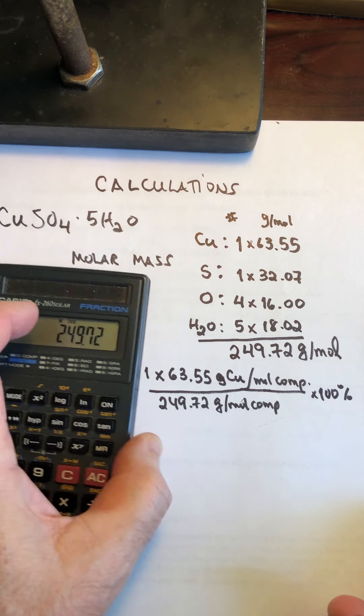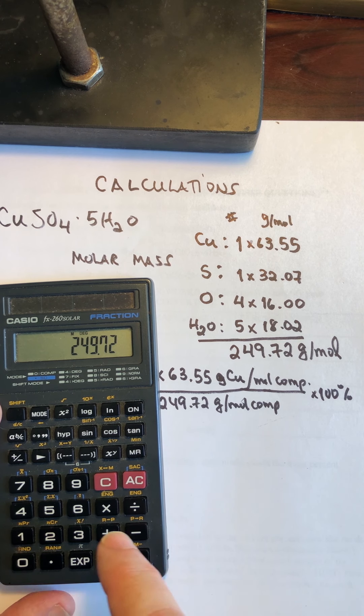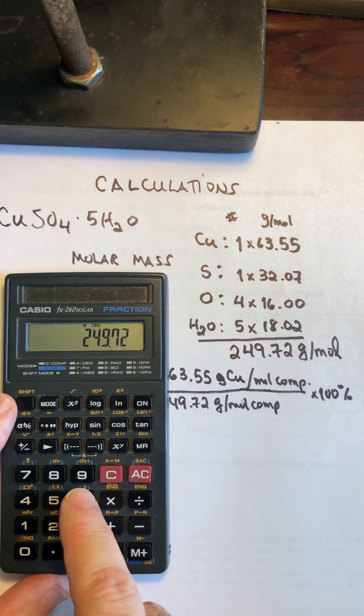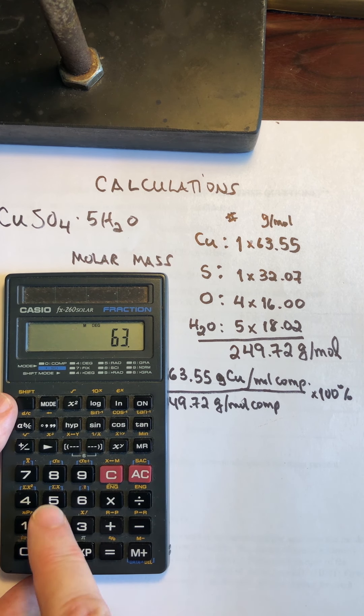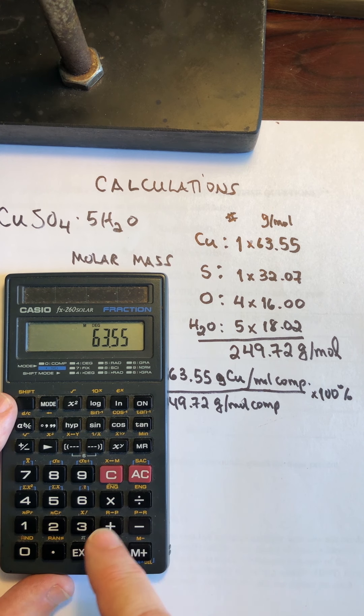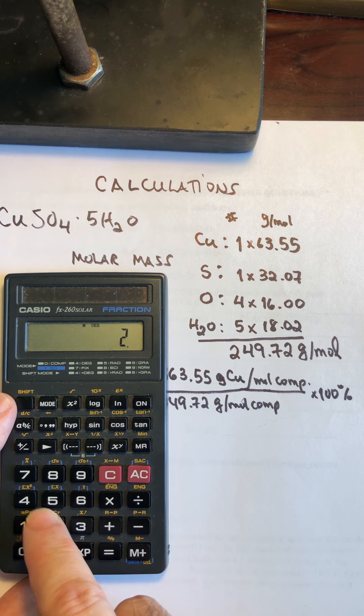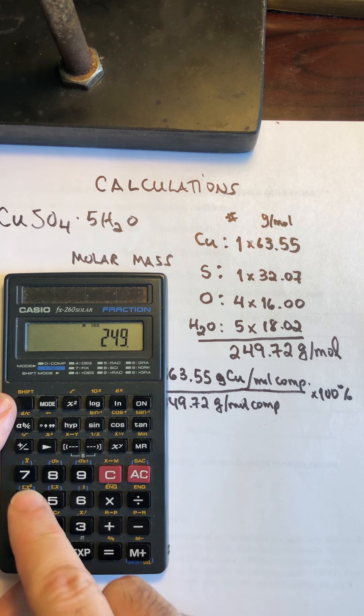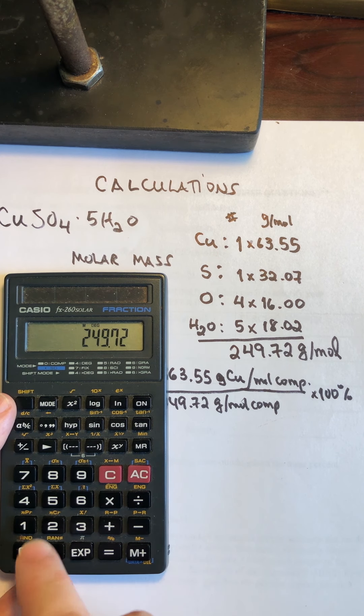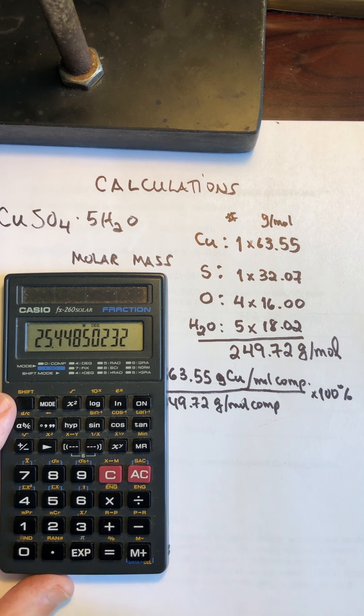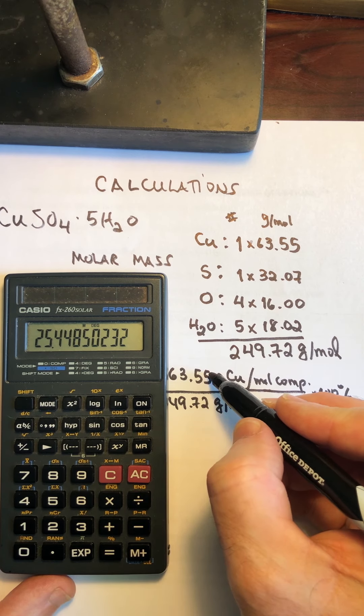We had 63.55 divided by 249.72 grams per mole times 100 equals 25.448. But because this number here only has 4 sig figs,